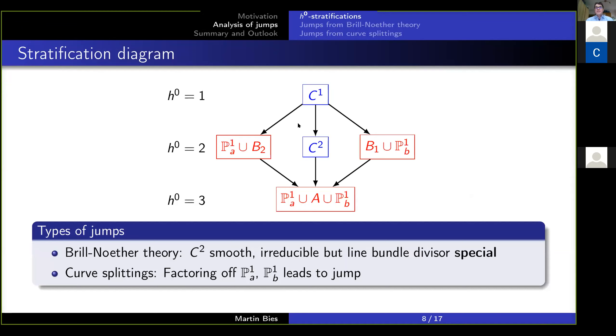Secondly, we see the two different effects here that give us a jump. One is this blue transition here, which means that we're going into a curve C_2 which is smooth and irreducible. There's no topology change, but we see a jump on H^0. This is a jump defined by Brill-Noether theory, which I will explain in a moment. And the second type of jumps that we see come from curve splittings. That is, we factor off the P^1s here and thereby generate additional vector-like pairs.